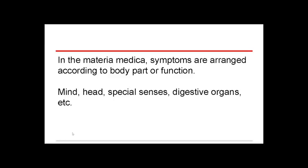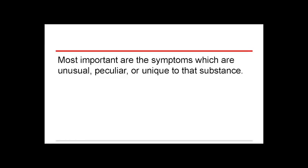In the materia medica, symptoms are organized according to body part or function. When you open a homeopathic materia medica, it will first say some general things about that substance, then talk about its mental symptoms. Then it'll go through the whole body — starting with the head, talking about headaches, face symptoms, special senses, hearing, touch, through the digestive organs, reproductive organs, extremities — presenting the known symptoms of that substance. But most important are the symptoms which are unusual, peculiar, or unique to that substance.